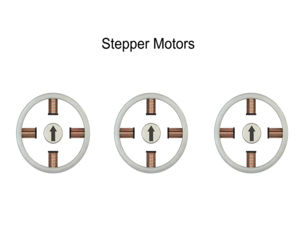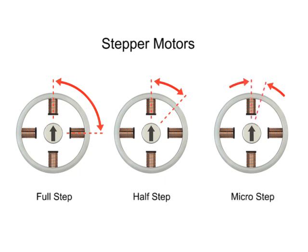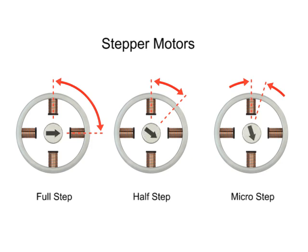Stepper motors have three step modes of operation that include full, half, and micro-stepping. The type of step mode output of any stepper motor is dependent on the design of the driver. The driver also controls both the step angle and speed of the motor by switching the field coils in a set sequence.